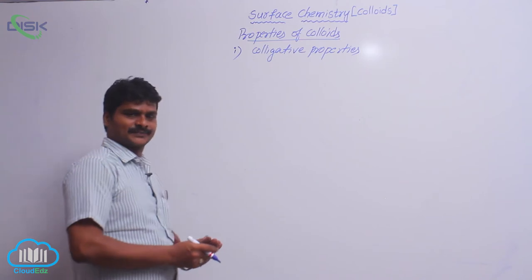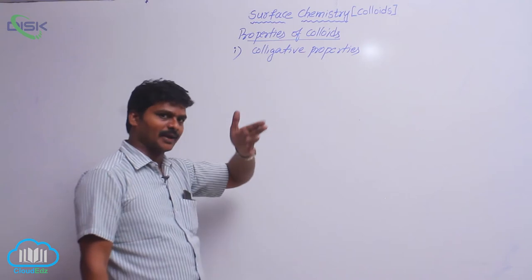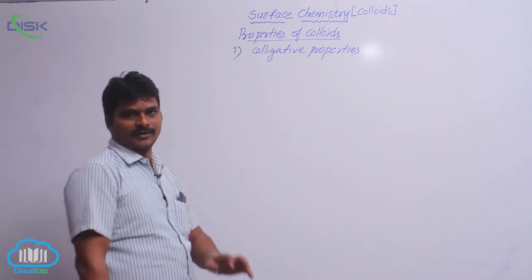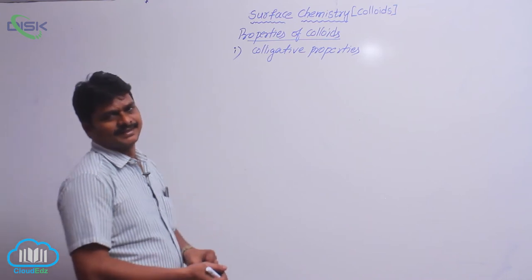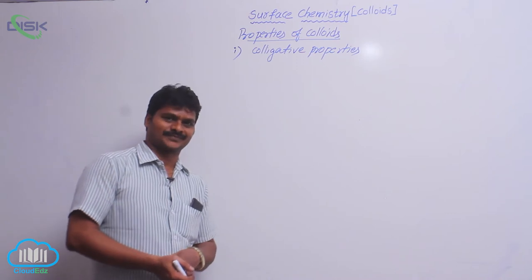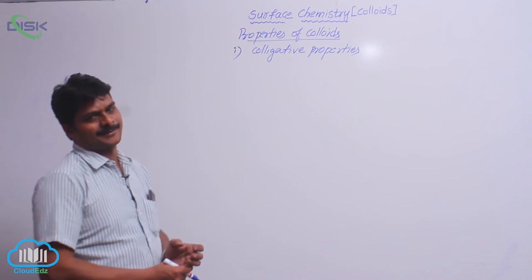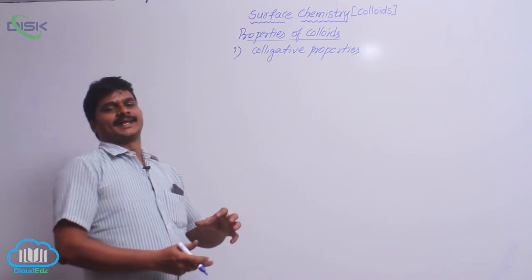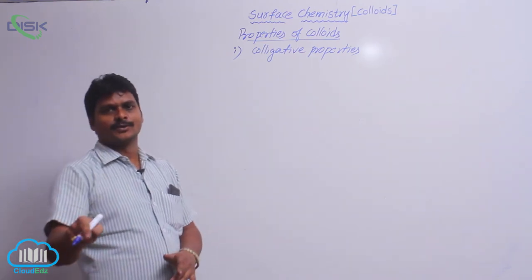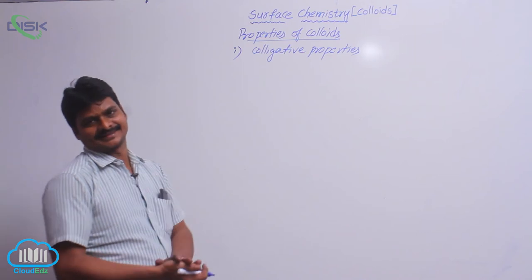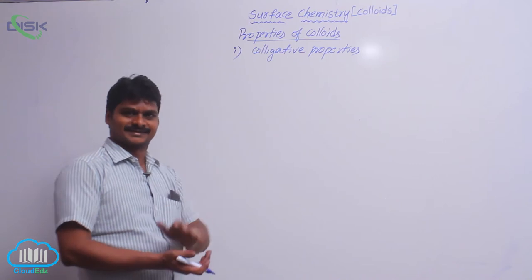Now, the question is: between true solution and colloidal solution, which will have more colligative property? The answer is true solution. Why does true solution have more colligative property than a colloidal solution? Because there are more number of particles in the true solution. In a colloidal solution, there are aggregates of 100 or more than 100 particles.